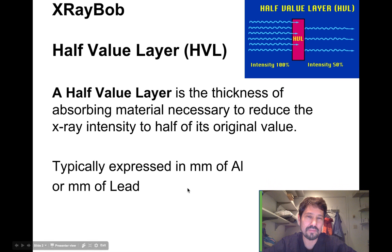Only 50% of the x-ray intensity will transmit through a half value layer. Typically, we express this in millimeters of aluminum or millimeters of lead when we're talking about aprons and lead shields.